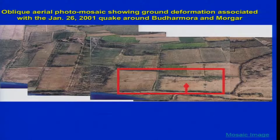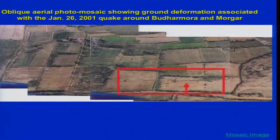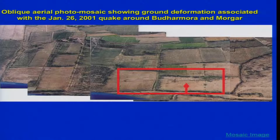This oblique aerial photo mosaic shows ground deformation associated with the 2001 earthquake in Kutch. We are unable to see the horizon, so this is a low oblique aerial photograph. Since we took the photographs quickly with overlap in mind, we could view this terrain in three dimensions — that is, have stereographic vision — as well as create a mosaic of the complete terrain.